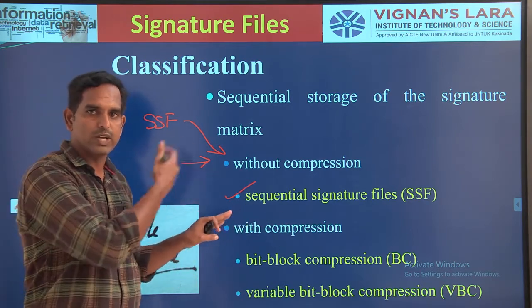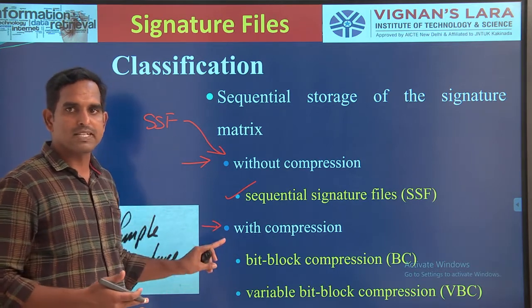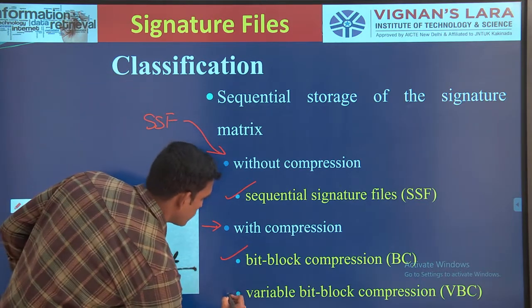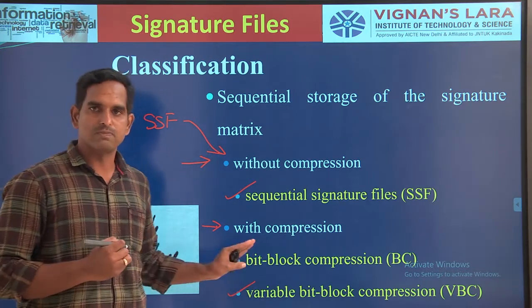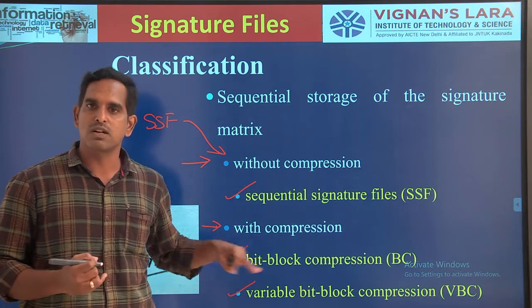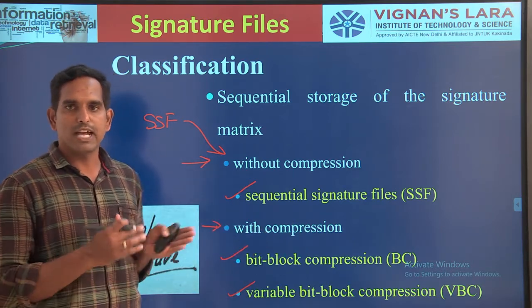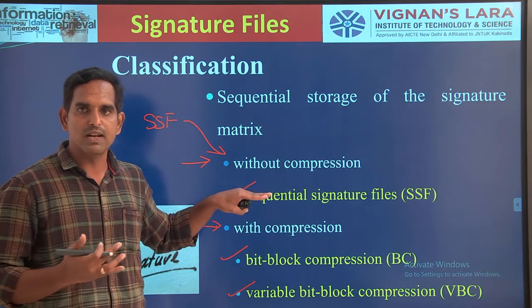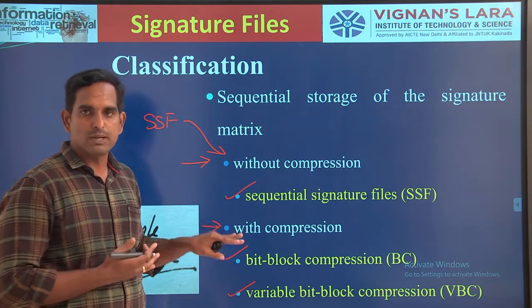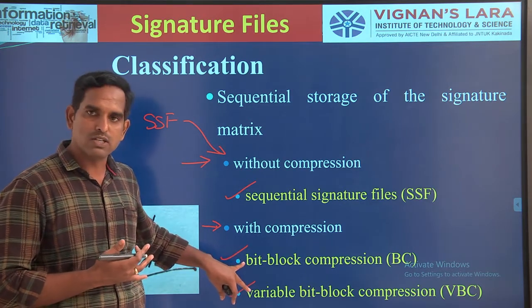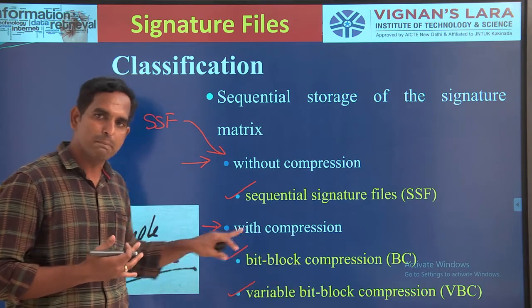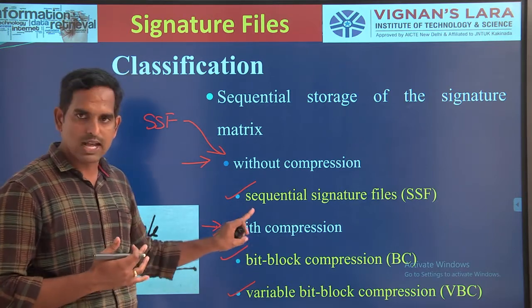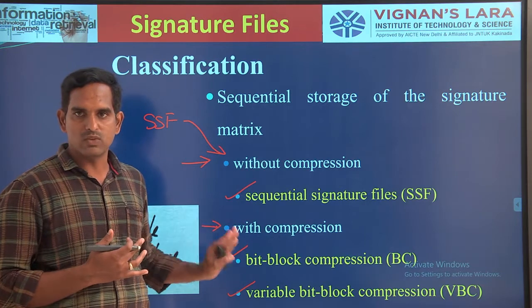The various compression techniques we will look at in the next sessions. When you implement the compression, we have various methods. The first method is bit block compression, and the second one is variable bit block compression. We will be looking at bit block compression and variable bit block compression in the next session. So if you do not implement compression, we call the signature file the sequential signature file, and if you implement compression, the file can be either bit block compression or variable bit block compression.